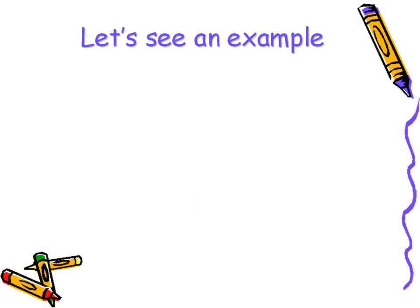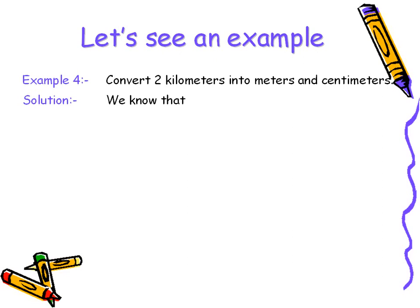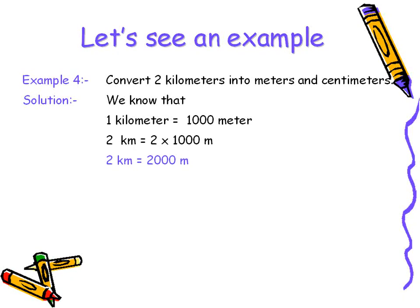An example would clarify the concept further. We are asked to convert two kilometers into meters and centimeters. We know that one kilometer is equal to one thousand meters. So two kilometers would be equal to two times one thousand meters. Therefore, two kilometers would be equal to two thousand meters.